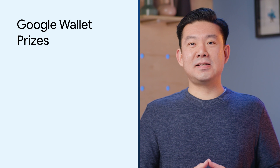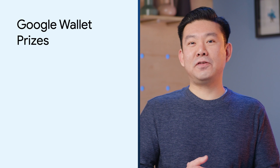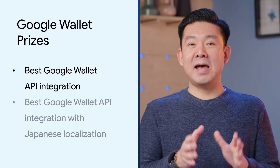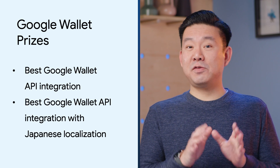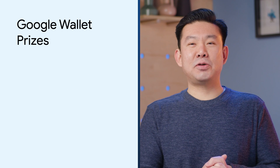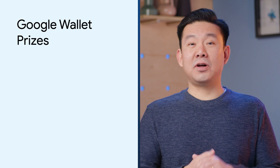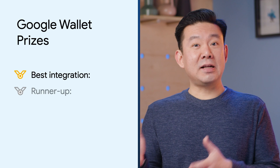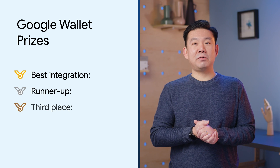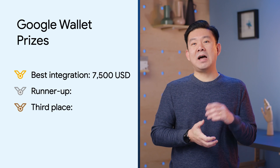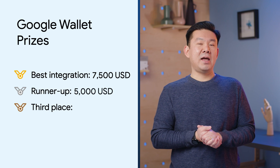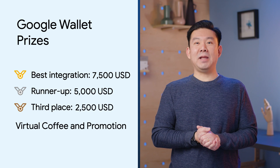Google Wallet is going to award prizes in two different categories: best Google Wallet API integration, and best Google Wallet API integration with Japanese localization. In each category, prizes will be awarded for the best integration, the runner-up, and third place. The best integration will receive a $7,500 U.S. prize, with $5,000 for the runner-up and $2,500 for third place.